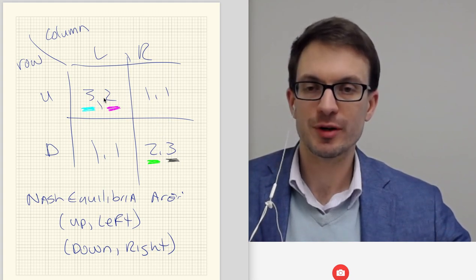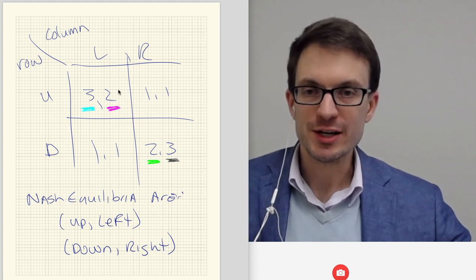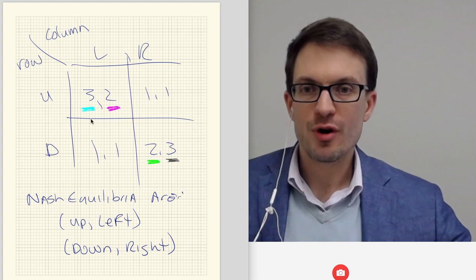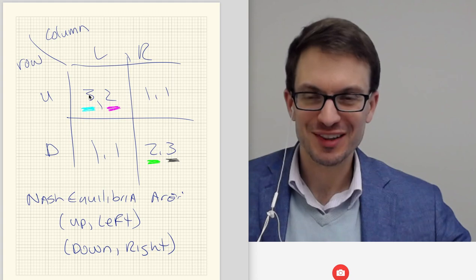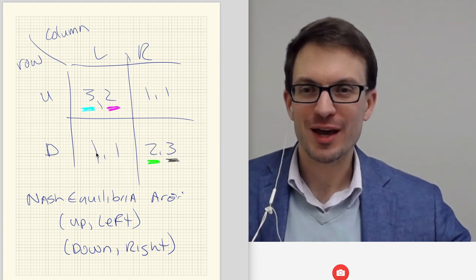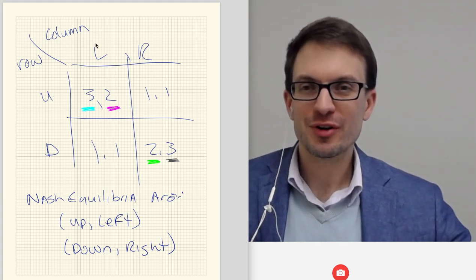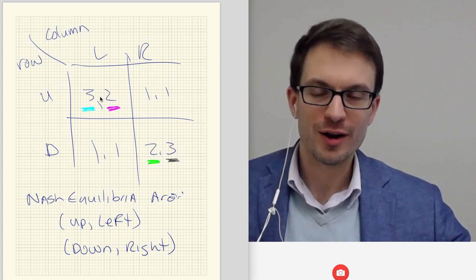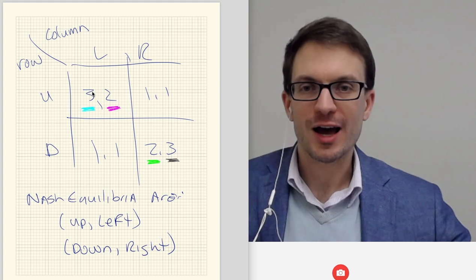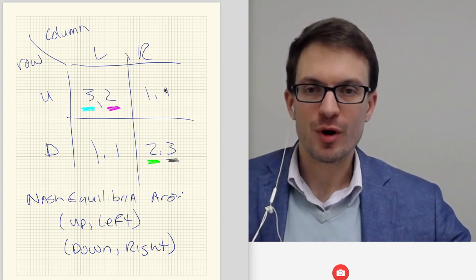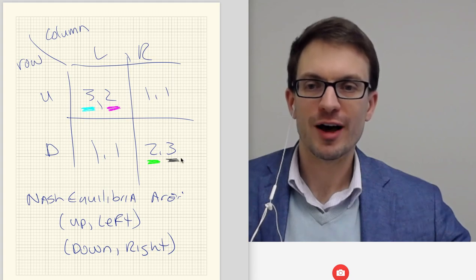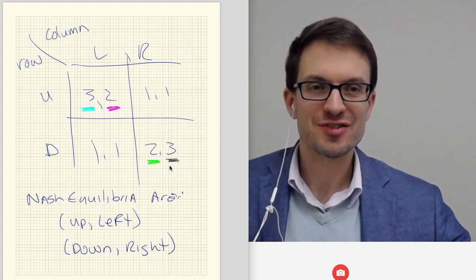Also, these indeed are Nash equilibria because once we're here, once we're in up-left, nobody wants to switch. If we are at up-left and row player switches to down, well, because column player's chosen left, that's going to be a reduction in payoff to one. We're at 1-1. Or what if we're at up-left and column player deviates to right, we're at 1-1. And you can do the same logic to verify that down-right is also a Nash equilibrium.